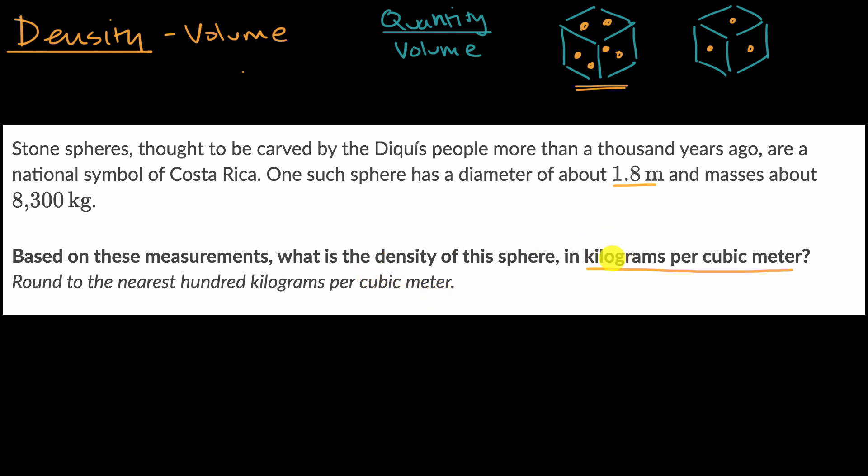All right, so we're going to want to get kilograms per cubic meter. We know the total number of kilograms in a sphere that has a diameter of 1.8 meters, but we don't know the volume just yet. So we have a sphere like this. This would be a cross-section of it. Its diameter is 1.8 meters.